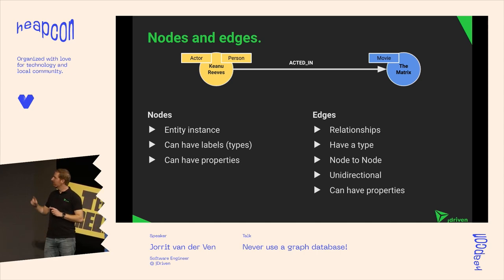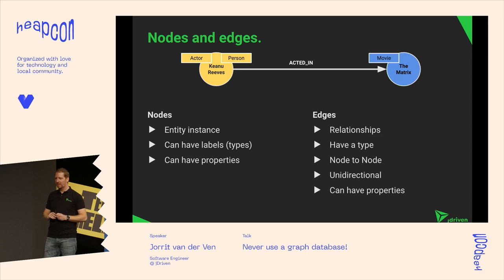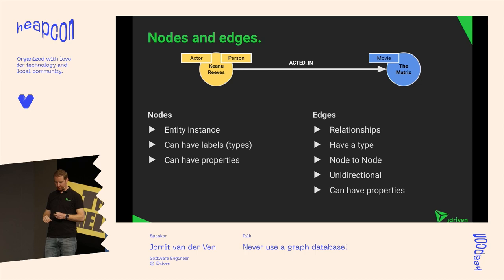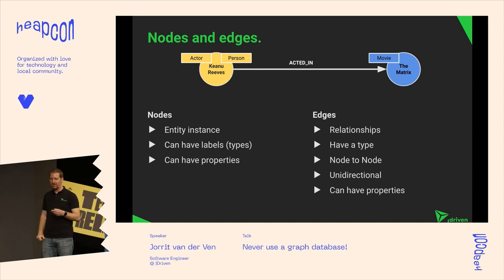Properties are tied to the node and not to the label, so a graph database is schema-less. If I add a label Person to a node, it doesn't mean all nodes of that type must have the same properties. In a normal relational database, if you have a schema with a table and multiple columns, all entries in those tables have the same columns.